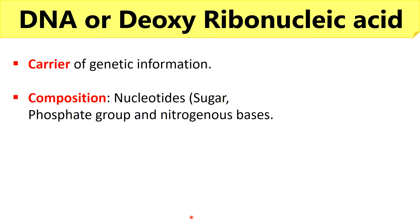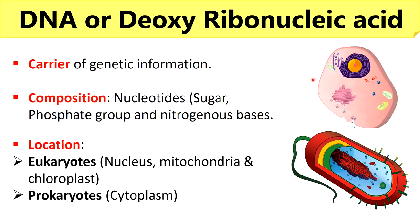DNA is formed by the combination of nitrogenous bases, sugar, and phosphate groups. The eukaryotic cells possess DNA compactly packed within the structure that is called the nucleus. Other membranous structures like mitochondria and chloroplast also possess some content of DNA. Whereas a prokaryotic cell lacks a specialized nucleus, and the DNA or genetic material is found within the cytosol.